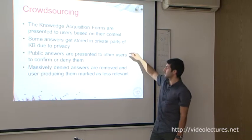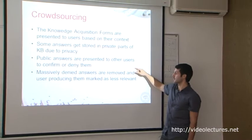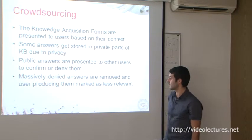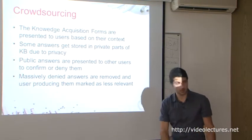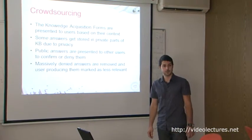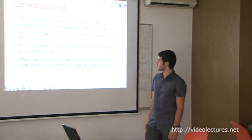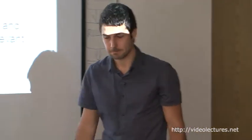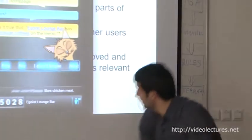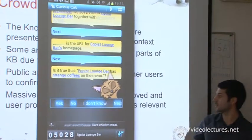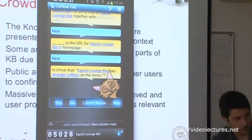Curious Cat asks whether something is true or not, and then we remove the ones which are wrong. Personal questions — questions hooked to the concept of 'you' — are private. Mostly it's by the rules; we do it by hand now. This is an example: somebody told it there is a strange coffee on the menu, and then it was asking me whether this is true or not. This is how we get rid of bad data. There are challenges with crowdsourcing: quality, consistency, truth control, different users believing different things, and maintaining user involvement.